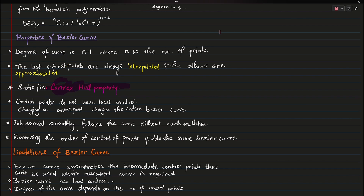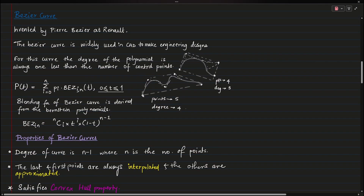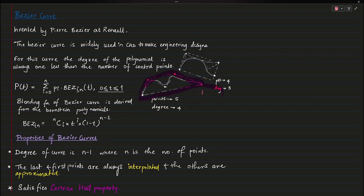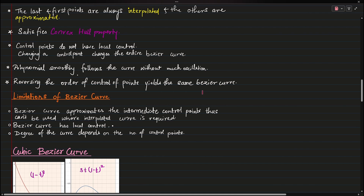The Bezier curve satisfies the convex hull property — the entire curve stays within the convex hull formed by its control points. Bezier curves do not have local control: changing a control point will change the entire curve. The polynomial smoothly follows the curve without much oscillation, because there's no sinusoidal function — it's just polynomials.